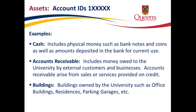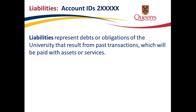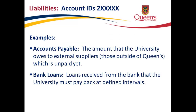Accounts receivable includes money owed to the university by external customers and businesses, arising from sales or services provided on credit. Buildings owned by the university, such as office buildings, residences, and parking garages, are also assets. Liabilities represent debts or obligations of the university from past transactions which will be paid with assets or services. Examples include accounts payable — amounts the university owes to external suppliers that are unpaid — and bank loans received from the bank that must be repaid at defined intervals.